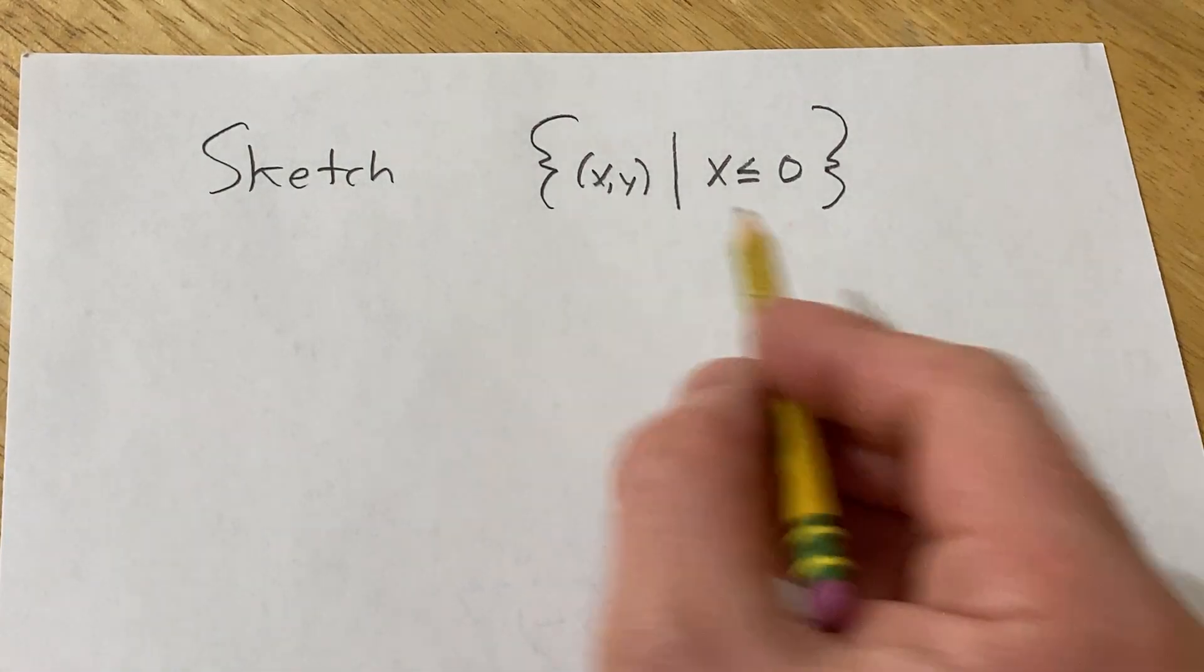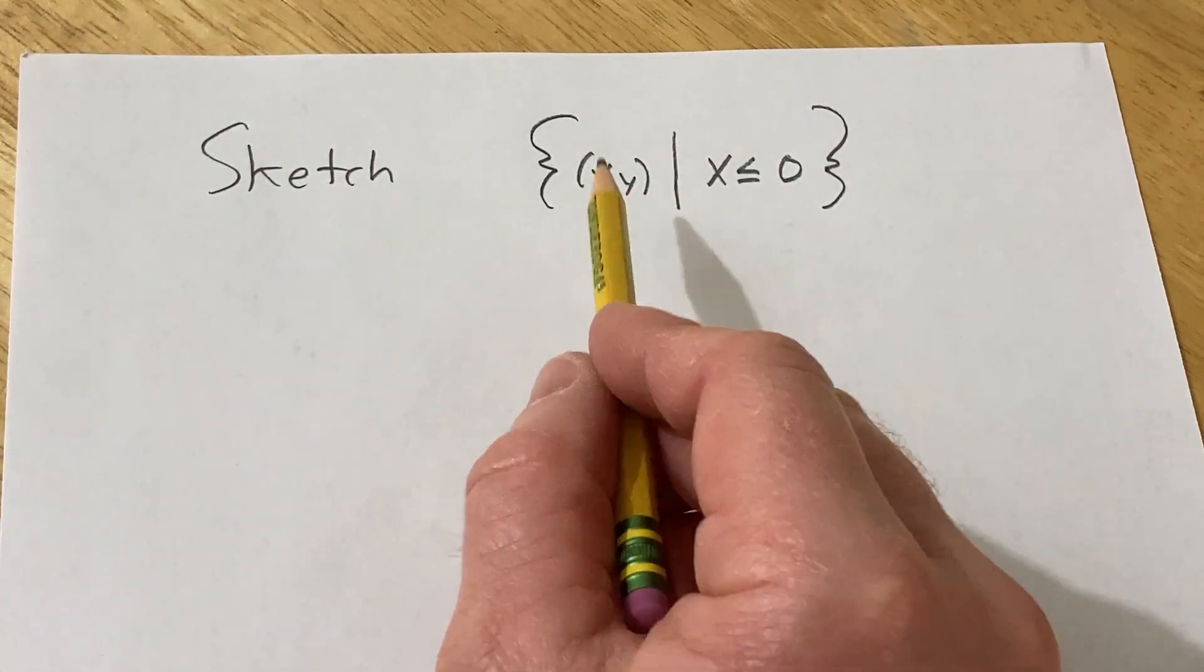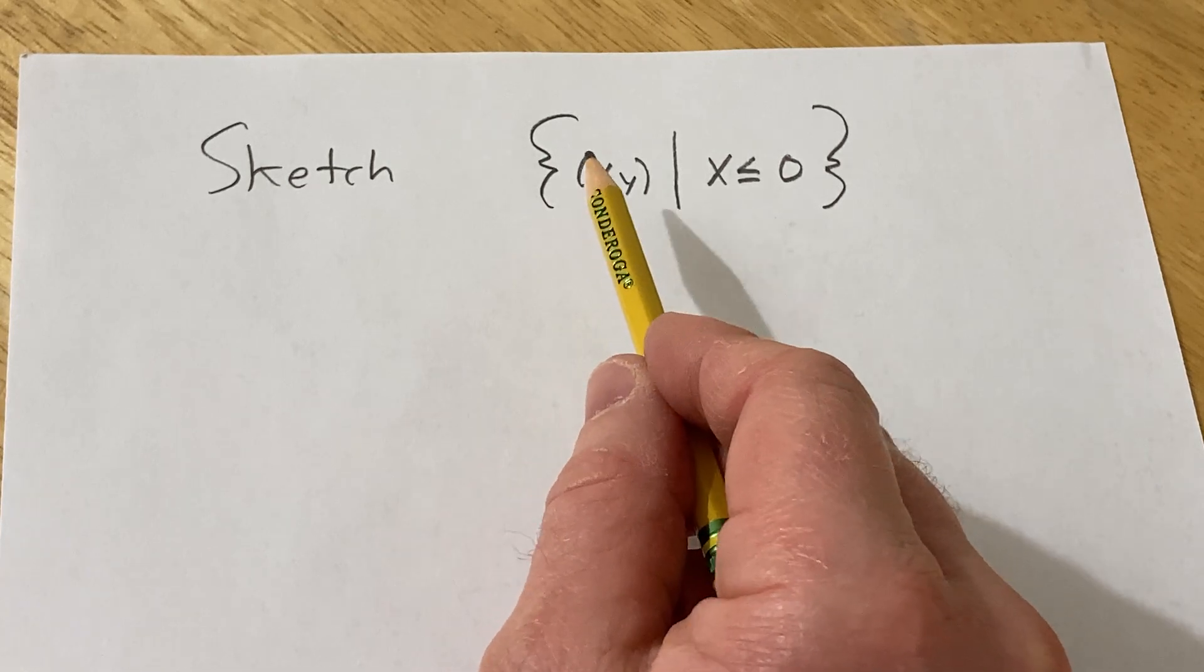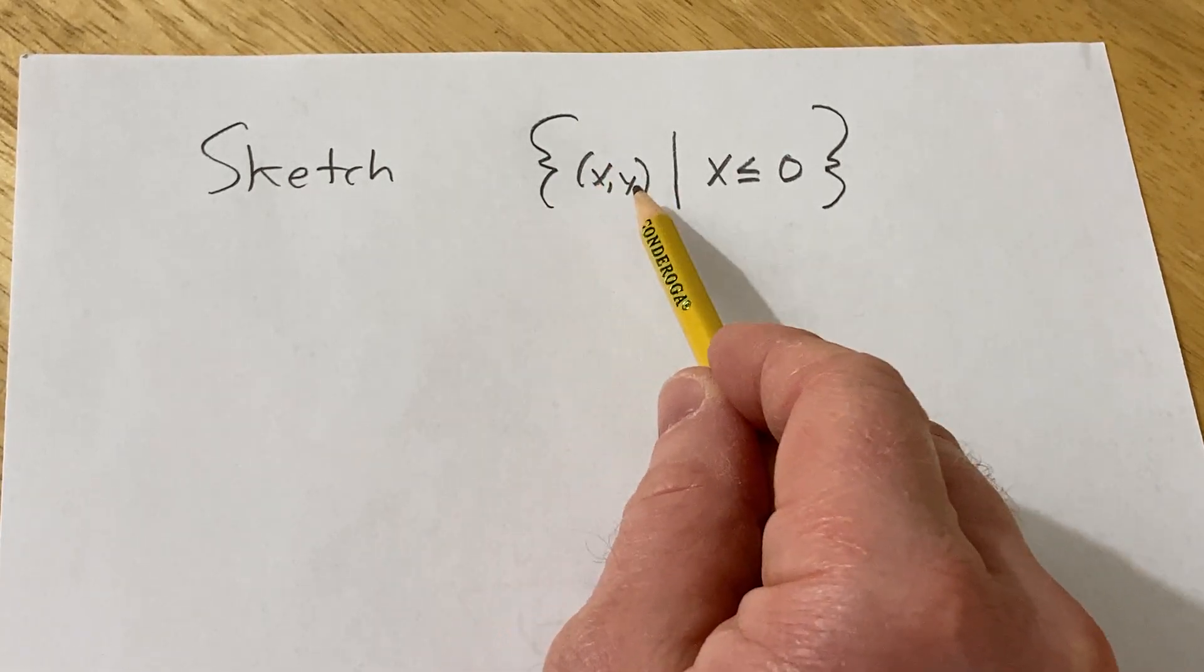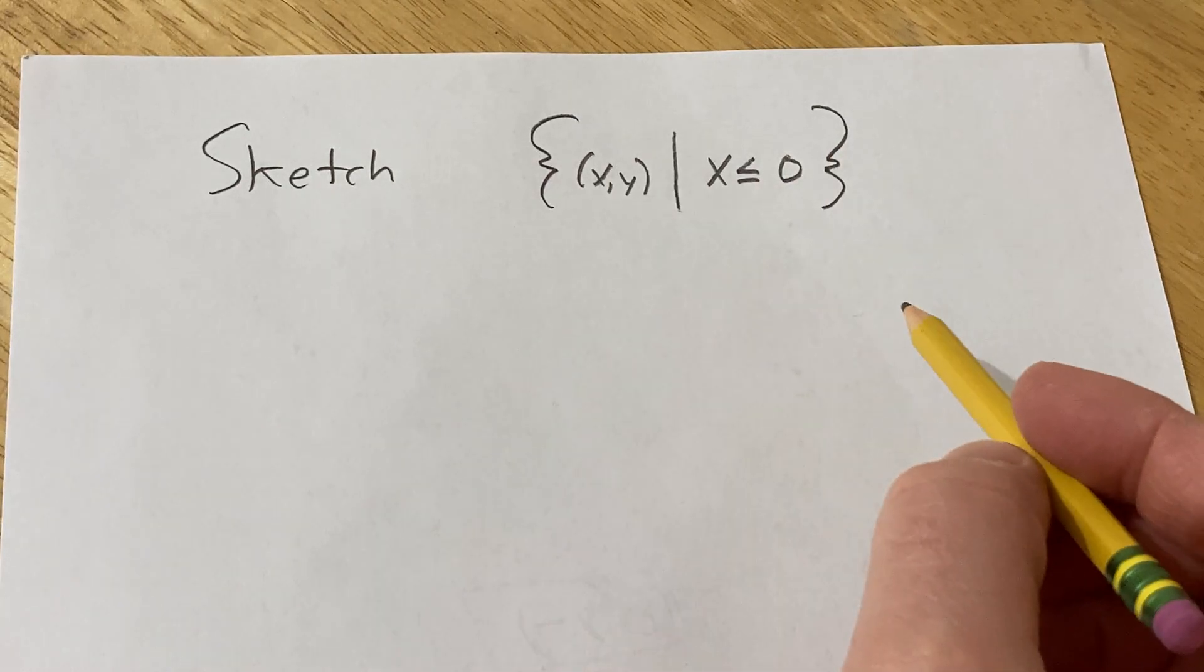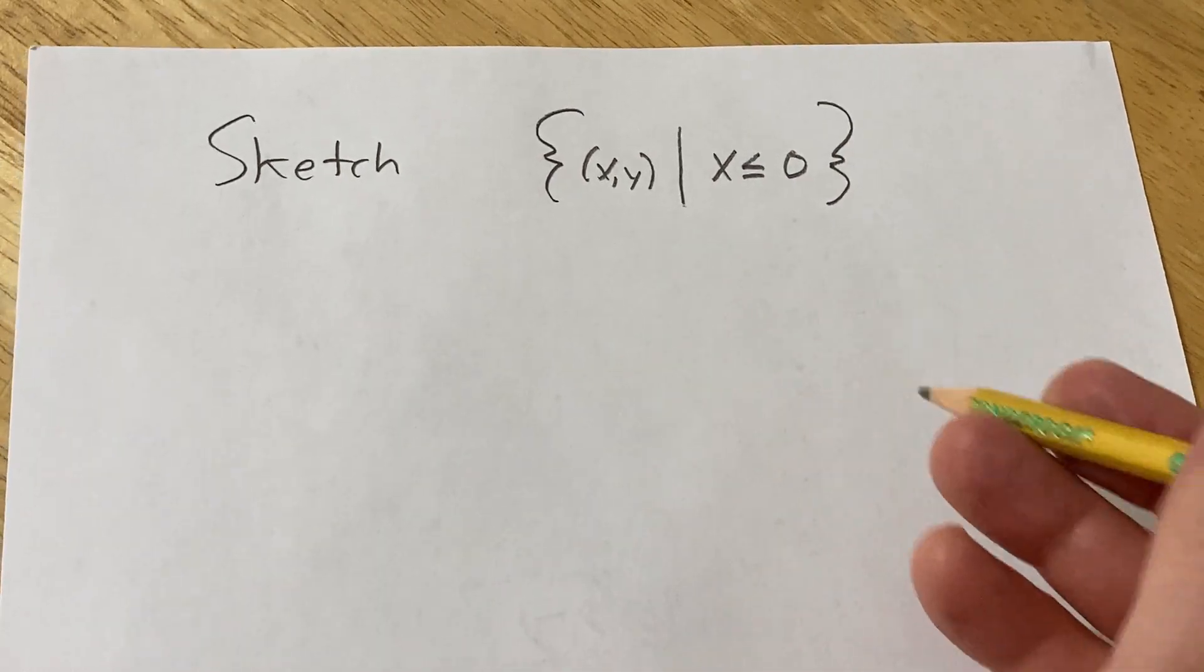In this problem we have to sketch the region given by this set. So this set contains all of the ordered pairs such that x is less than or equal to zero. So let's go ahead and try to give a sketch of this set.